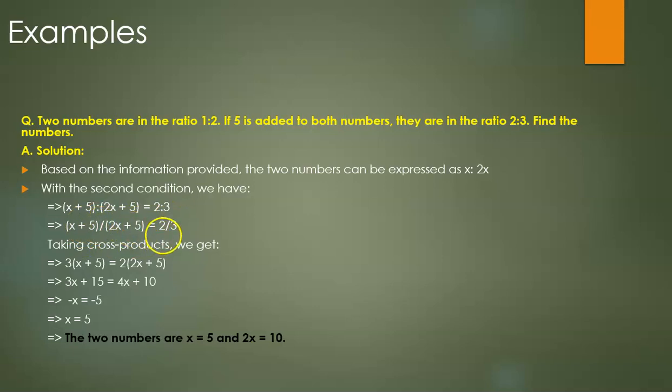Then we take the cross products and we get this equation: 3(x+5) = 2(2x+5). Simplifying that gives us x equals 5.